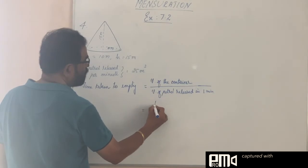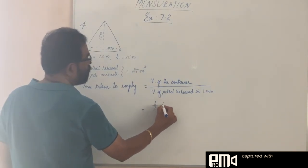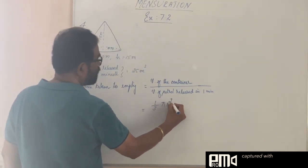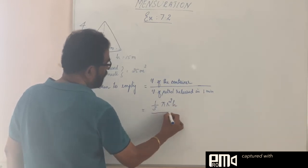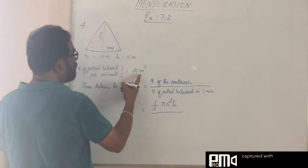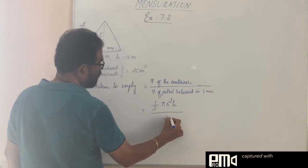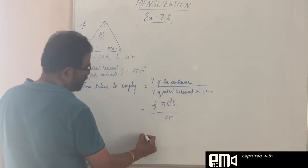So volume of the container, it is volume of the cone, one-third pi r squared h, divided by volume of the petrol released in one minute, it is 25 meter cube, so just 25.